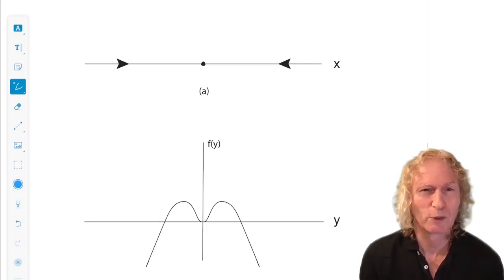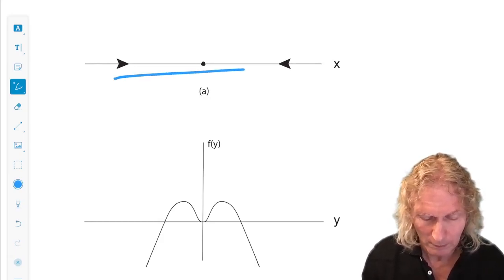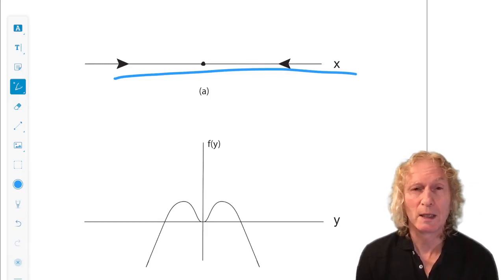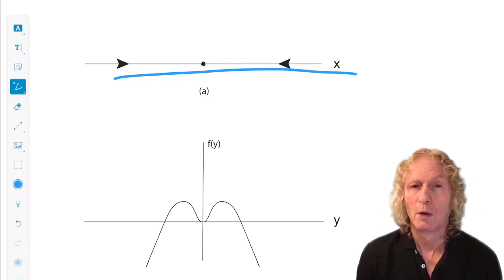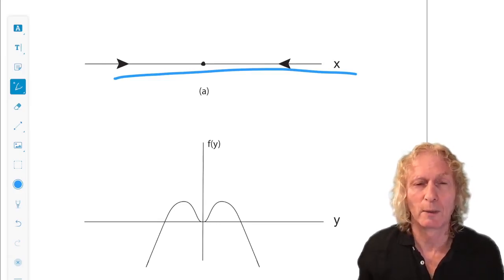So, x-dot equals minus x. We know that the phase space for that looks like this. It has an equilibrium point at the origin. And any other initial condition, the trajectory through that initial condition will approach the origin asymptotically as time goes to infinity.